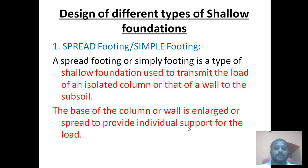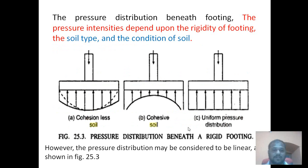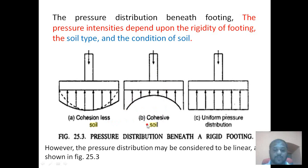Now we look at the design of different types of shallow foundations. First, we consider the basics: the distribution of pressure beneath a spread footing depends on the type and condition of soil. The figures shown illustrate pressure distribution for cohesionless soils, for cohesive soils, and uniform pressure distribution.